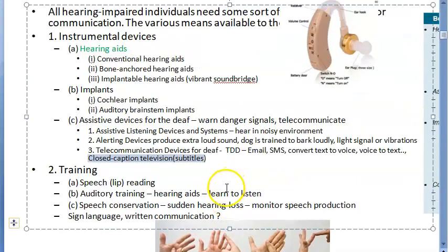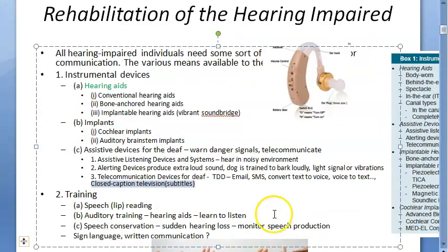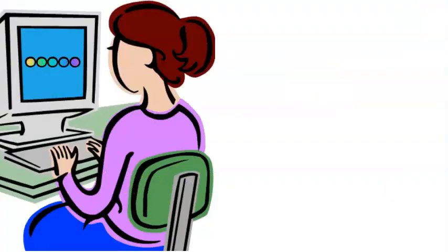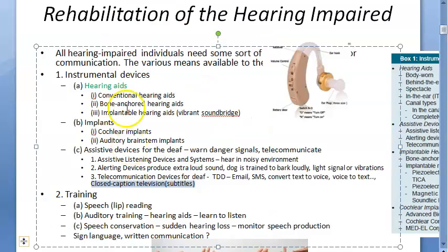So overall, we are trying to rehabilitate the hearing impaired. Two main categories covered so far: under instruments we finished assistive devices for the deaf, and we also finished the training part. Now let's look at the main instruments — hearing aids and implants.